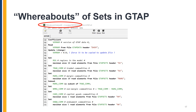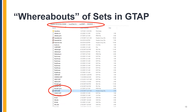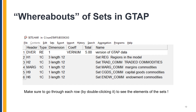Now we want to tell you how to locate the sets and set files from AnalyzeGE. This can be handy when you implement GTAP. From the top, follow where it is highlighted with the red circle, and check the directory. Next, please go to the directory shown in the previous slide and look for the sets file. By double-clicking each row, you'll find out what elements are in each set.